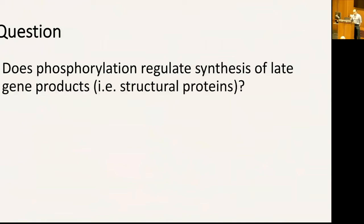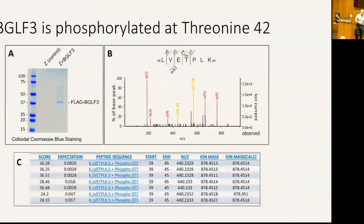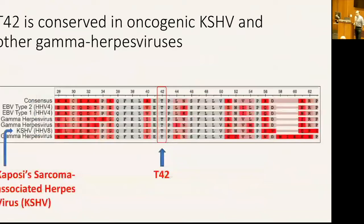The question is: does phosphorylation regulate synthesis of late gene products? We started by doing mass spectrometry — we purified BGLF3 from EBV lytically-infected cells, followed by phospho-mass spec. We identified threonine 42 as the phosphorylated residue. The experiment was done seven times, and each time we identified phosphorylation at threonine 42. This residue is conserved in all herpes viruses, including Kaposi sarcoma herpes virus.